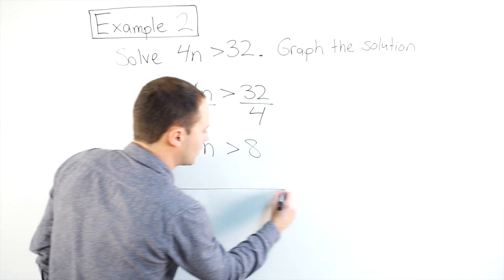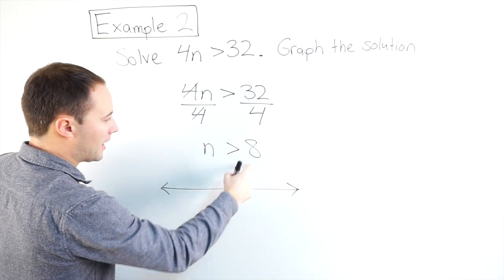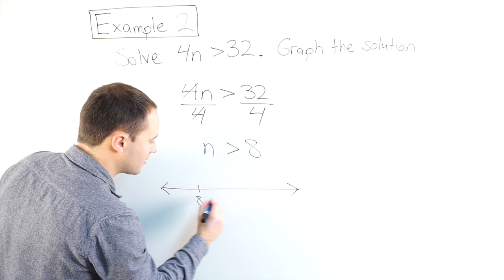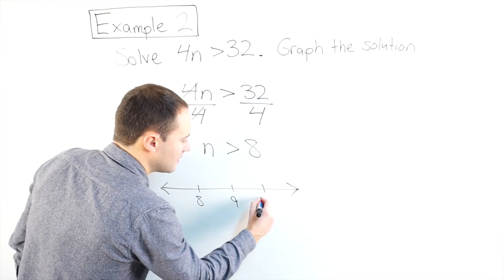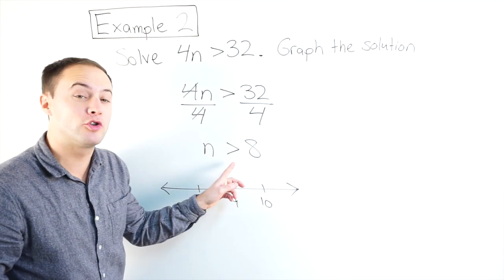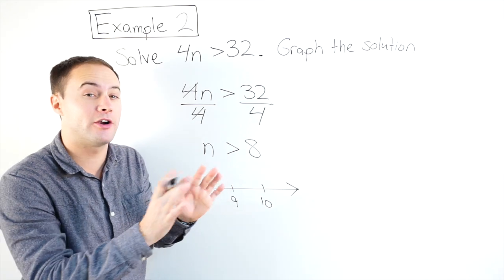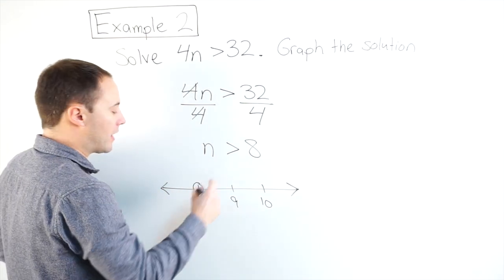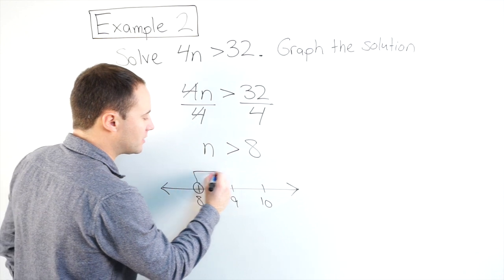Here is a quick little number line. I'm going to be at 8, let's say 8 is here, let's go 8, 9, 10, something like that. At 8, because it's greater than, it's not greater than or equal to, I'm going to have an open circle, and greater than, which means the arrow is going to the right.